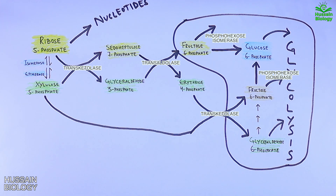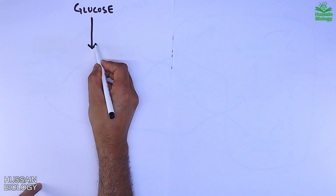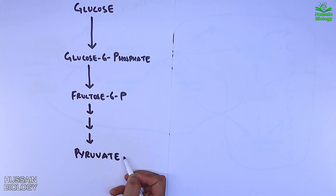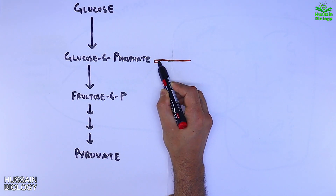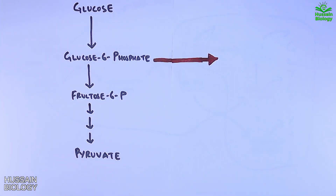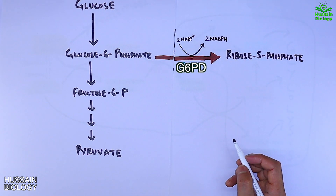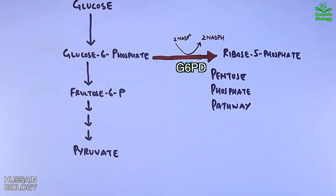One more thing to remember: why is it called a shunt? We see that glucose is driven into glycolysis and gets converted into pyruvate. Here, a sideway pathway starts where glucose-6-phosphate is acted upon by glucose-6-phosphate dehydrogenase and converts into ribose-5-phosphate in a series of reactions. This is why we call it a shunt pathway — we are pulling glucose-6-phosphate from glycolysis into another pathway, the pentose phosphate pathway.